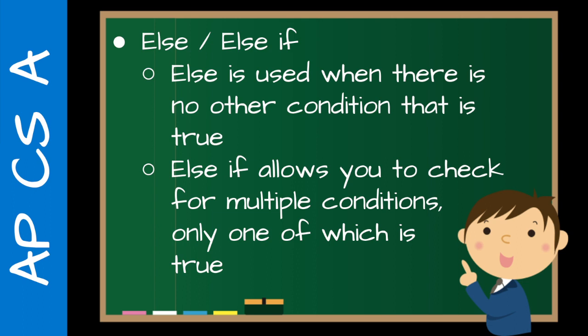And then, of course, going into else and else if. Else, of course, is used when there is no other condition that is true. So, for example, is it Tuesday? So if it's Tuesday print it's Tuesday, else print it's not Tuesday. So it can't be Tuesday and not Tuesday at the same time. There's only one possibility there. And then else if allows you to check for multiple conditions, only one of which is true. This is an important point. These options have to be mutually exclusive.